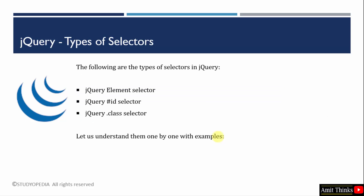Now, let us walk around the three types of selectors. We have the jQuery element selector, the dot class selector, and the hash ID selector. We will understand them one by one with examples.